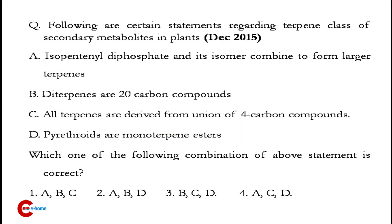This is a previous year CSER question. Read the following statement regarding terpenes, a class of secondary metabolites in plants. Four statements are given and you have to find which combination of statements is correct. This question is about secondary metabolites and terpenes.